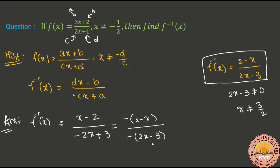The denominator gives 2x minus 3. The minus-minus cancels. So the final answer is f inverse of x equals (2 minus x) / (2x minus 3).